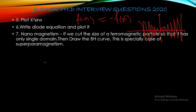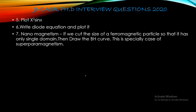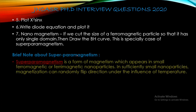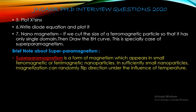The next question was nanomagnetism, a very interesting topic. They asked: if we cut the size of a ferromagnetic particle so that it has only a single domain, draw the BH curve. This is a special case of superparamagnetism. Superparamagnetism is a form of magnetism which appears in small ferromagnetic or ferrimagnetic nanoparticles. If you reduce the ferromagnetic material to nano dimensions, it will exhibit superparamagnetism.